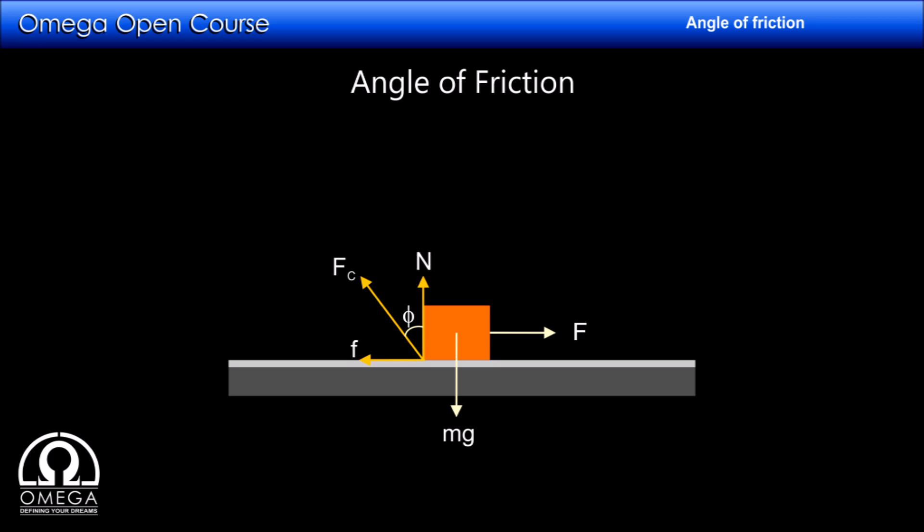In case the block is not moving, that is the frictional force is static, then this angle is a variable quantity. If we increase the external force, the friction force also increases and so does the angle of friction. Similarly, if external force is reduced, the friction also reduces, reducing the angle of friction.